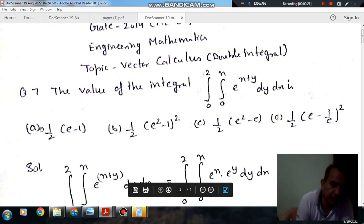Option A: 1/2 (e-1). Option B: 1/2 (e²-1)² all square. Option C: 1/2 e(e²-e). Option D: 1/2 (e - 1/e)² all square.